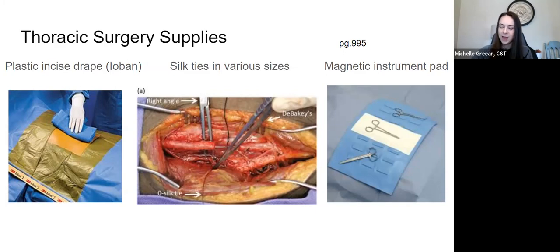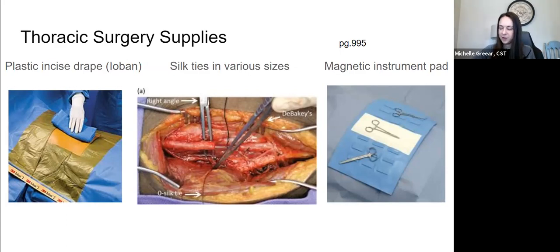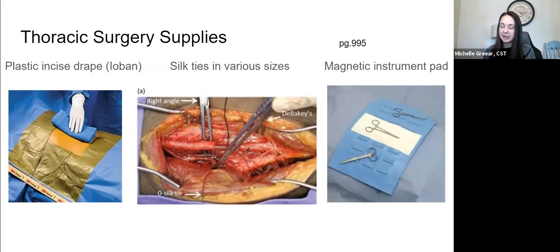Let's start with the Allison retractor — we always called it the whisk or the egg beater, but it clearly looks like a whisk. That's a common nickname for it. Another one with a nickname: your Davidson retractor. This is a very unique looking retractor, and it is to retract the scapula — we called it the scapula retractor. Some people call it the spatula retractor because it does look like a spatula. So you've got two instruments that could very easily be mistaken for kitchen items.